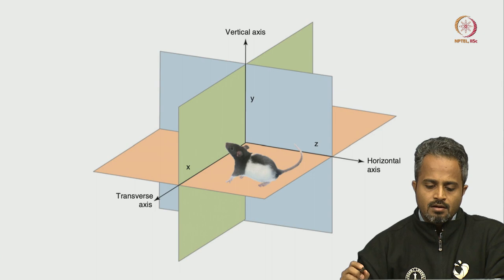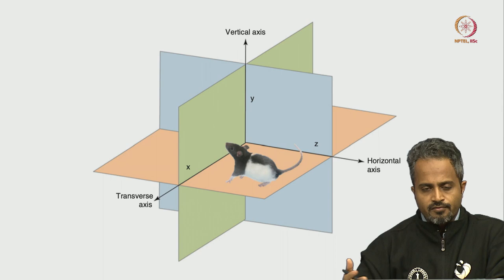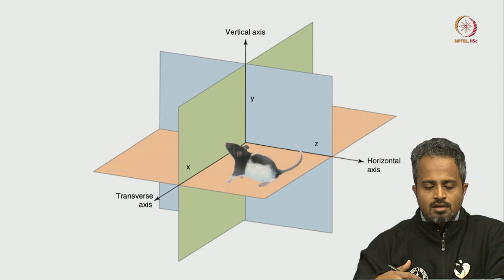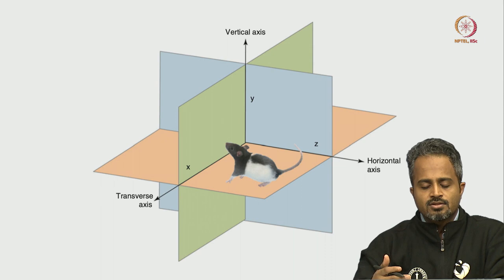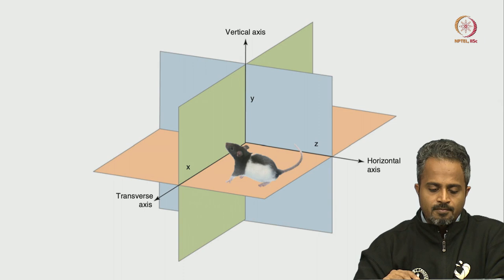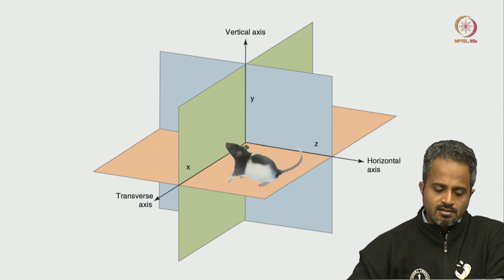When it comes to planes, we need to understand the X, Y, Z axis in the rodent body. Most of you will be familiar with Cartesian coordinates. We have taken that theory and applied it to the stereotactic space around the rodent's head. Before we go into the details of stereotaxy, you need to understand how the X, Y, and Z axes are oriented for the rodent body, because of the animal's natural position — these become the vertical axis, horizontal axis, and transverse axis.